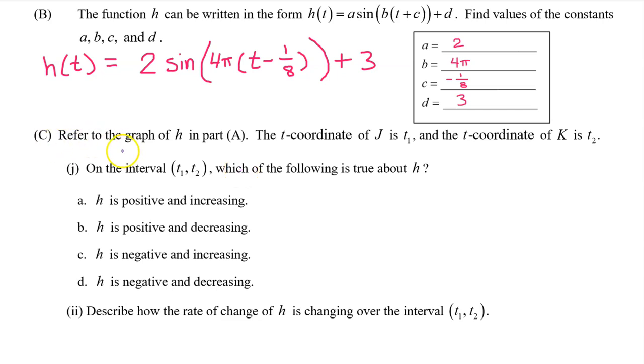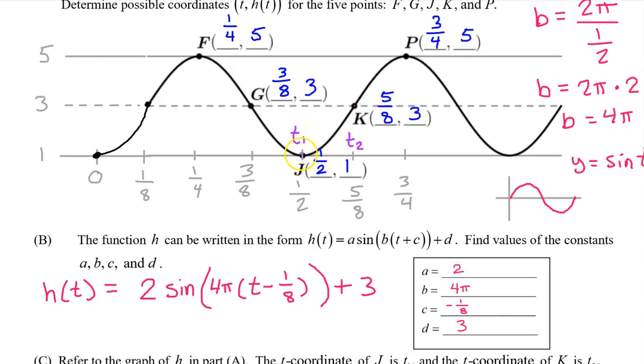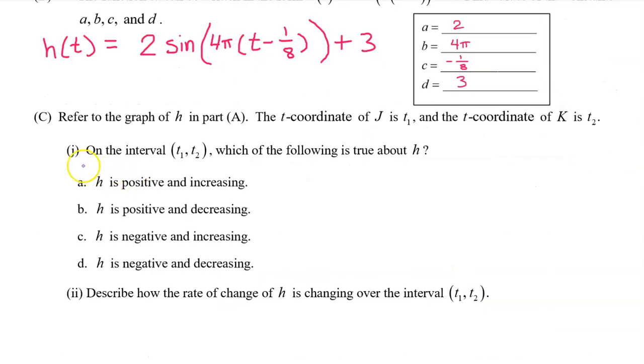Part C. Refer to the graph of h in part A. The t coordinate of J is t1, and the t coordinate of K is t2. So this input value is t1, and this input value is t2. See part one.